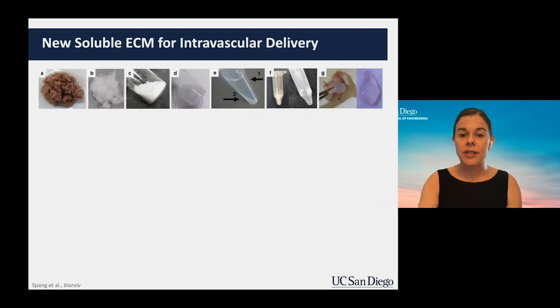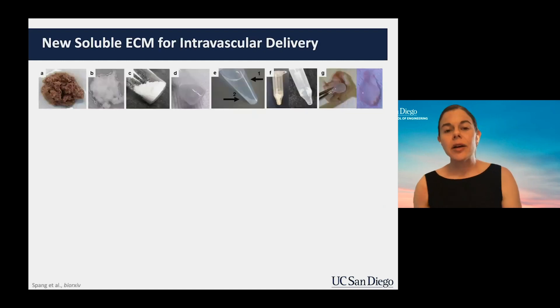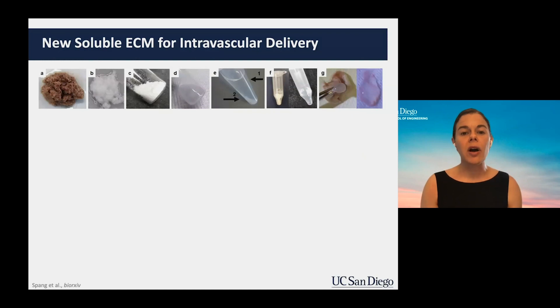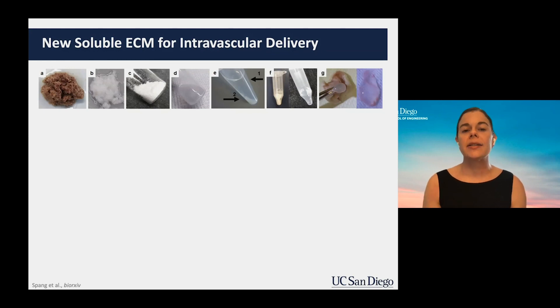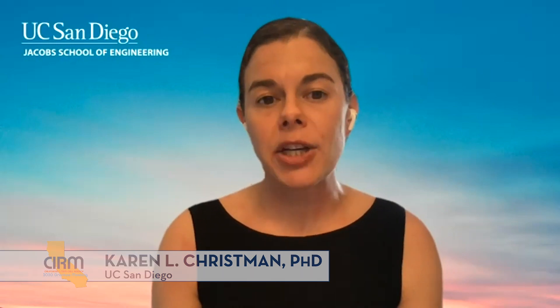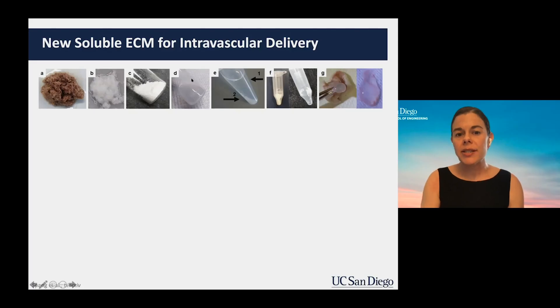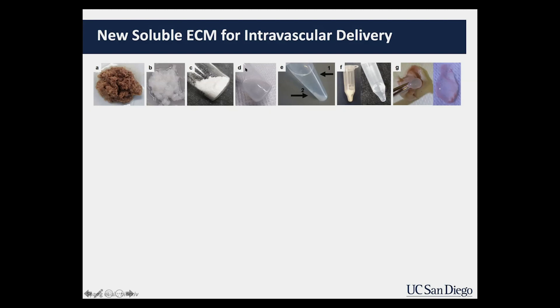We've now developed a new version called a soluble extracellular matrix to enable a different form of delivery. The materials I showed previously were injected directly into the tissue, but we wanted something that could be delivered through the vasculature to diseased or inflamed tissues. We go through the same process shown earlier up to step D, and then we fractionate it — removing the insoluble components and leaving behind just the soluble component.